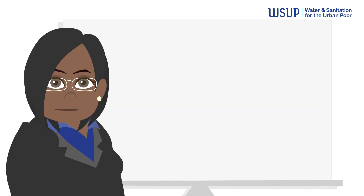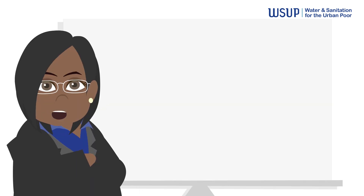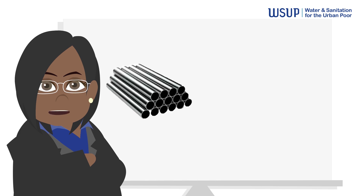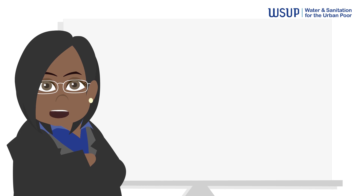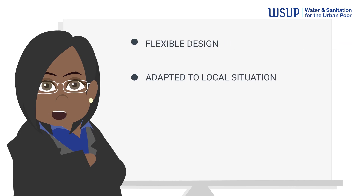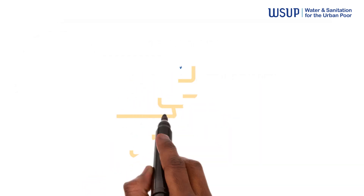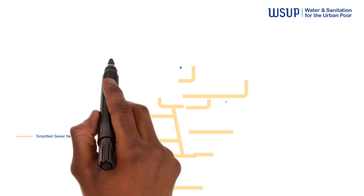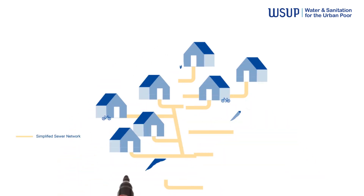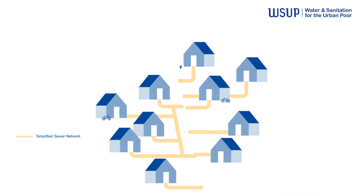A simplified sewer is a sewerage network constructed using smaller diameter pipes laid at a shallower depth and at a flatter gradient than conventional sewers. It allows for a more flexible design better adapted to the local situation but at lower costs. The pipes are usually laid within the property boundaries through either the back or front yards, rather than beneath the central road, allowing for fewer and shorter pipes.